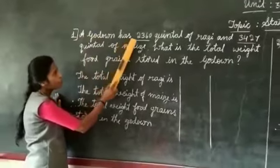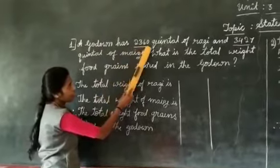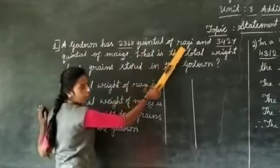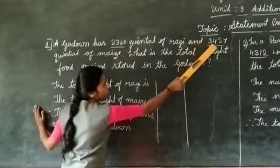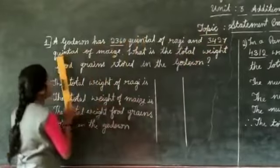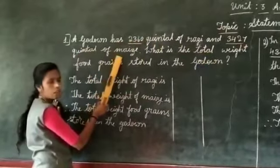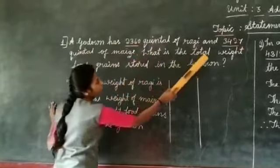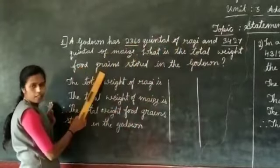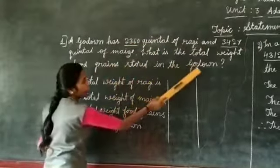A godown has 2360 quintal of ragi and 3457 quintal of maize. What is the total weight of food grains stored in the godown?